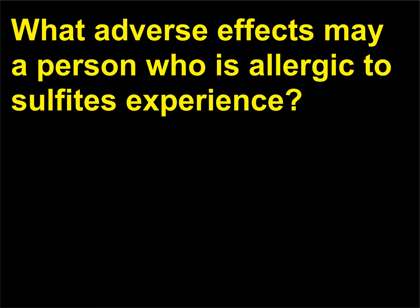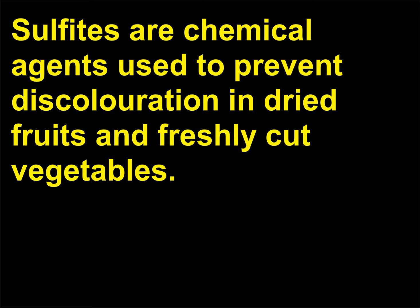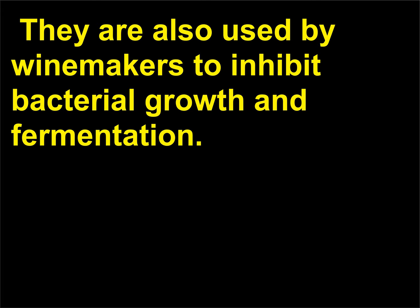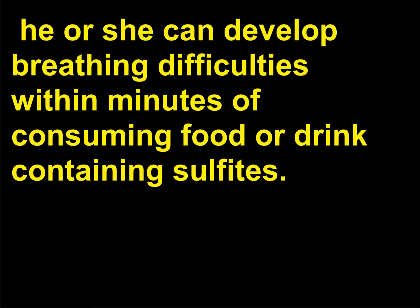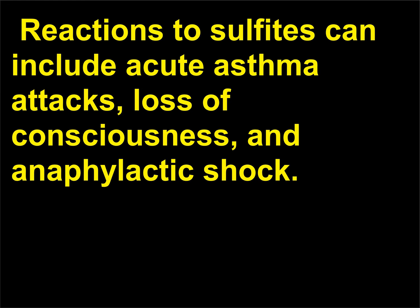What adverse effects may a person who is allergic to sulfites experience? Sulfites are chemical agents used to prevent discoloration in dried fruits and freshly cut vegetables. They are also used by winemakers to inhibit bacterial growth and fermentation. If a person is allergic to sulfites, he or she can develop breathing difficulties within minutes of consuming food or drink containing sulfites. Reactions to sulfites can include acute asthma attacks, loss of consciousness, and anaphylactic shock.